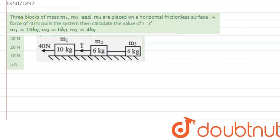There are three blocks of masses m1, m2, and m3 placed on a horizontal frictionless surface. A force of 40 Newton pulls the system. Then we need to calculate the value of t if m1 is given as 10 kg, m2 is 6 kg, and m3 is 4 kg.